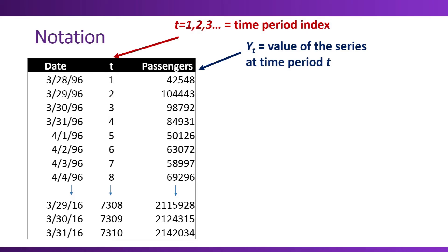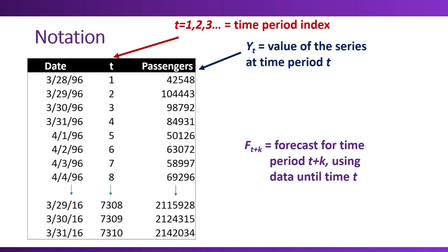A third term and notation that we will use has to do with forecasting. F sub T plus K refers to the forecast, or the forecasted value, for time period T plus K when we're using data only until time T. This notation K is related to what's called the forecast horizon, which is the number of periods ahead that you want to forecast. In some applications, we're only interested in one step ahead forecasts, and in that case K will be equal to one. In other cases, we might want longer term forecasts — for example, if we want monthly forecasts for the next year, then we want K equals one, two, three, all the way up to 12.